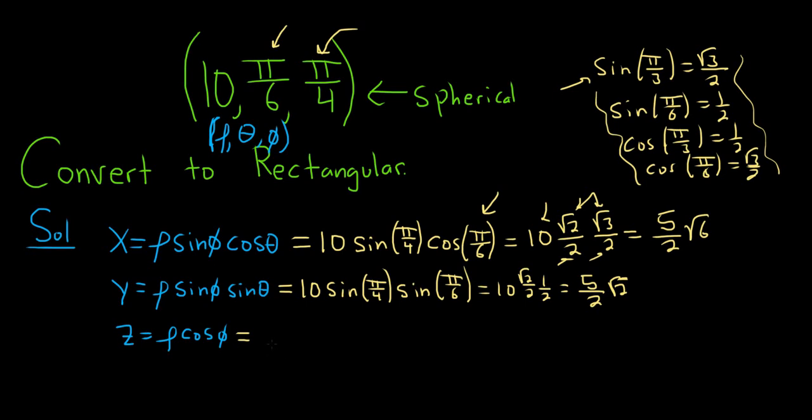And then rho is 10 here. And then cosine phi, so again, phi is pi over 4. And the cosine of pi over 4 is the square root of 2 over 2. So we get 10 times the square root of 2 over 2. So that's 5 square root of 2.